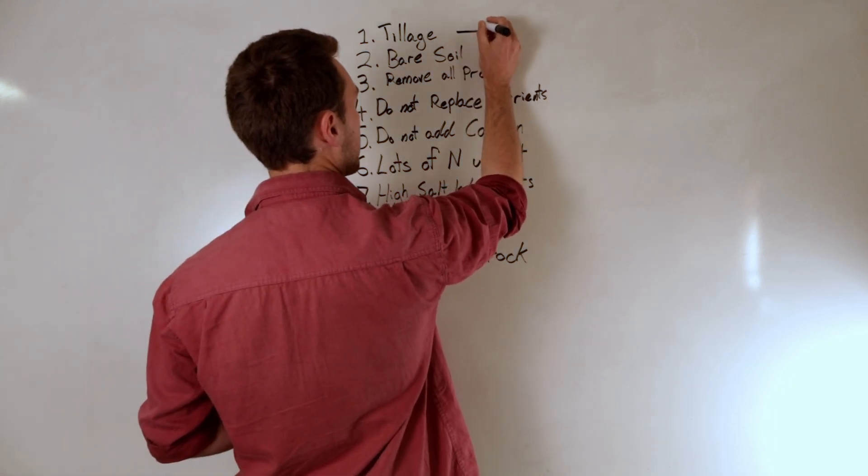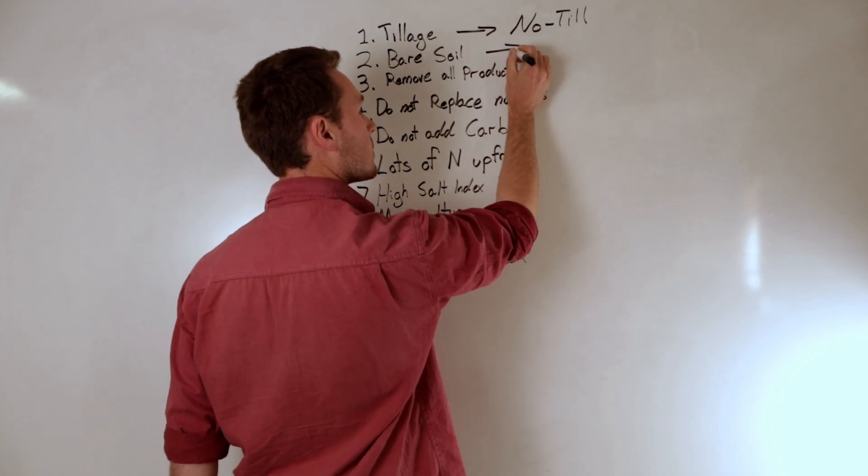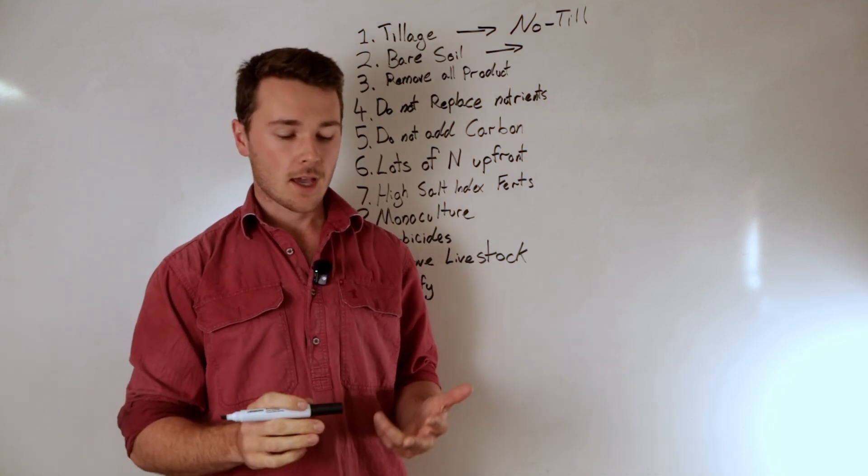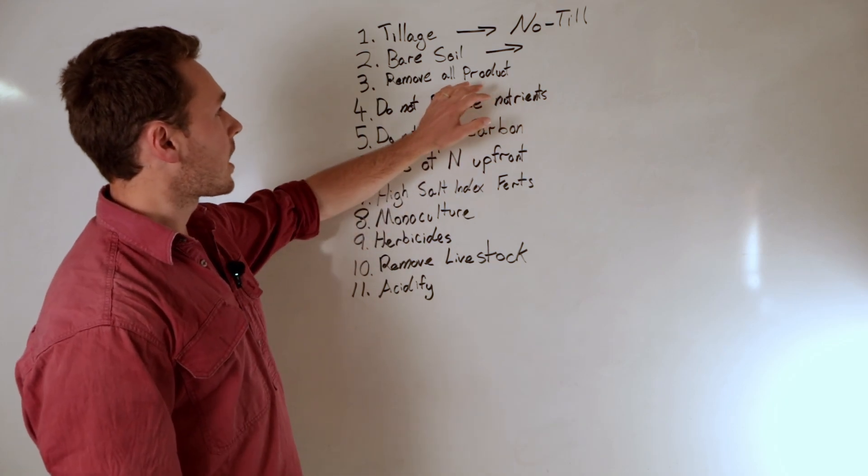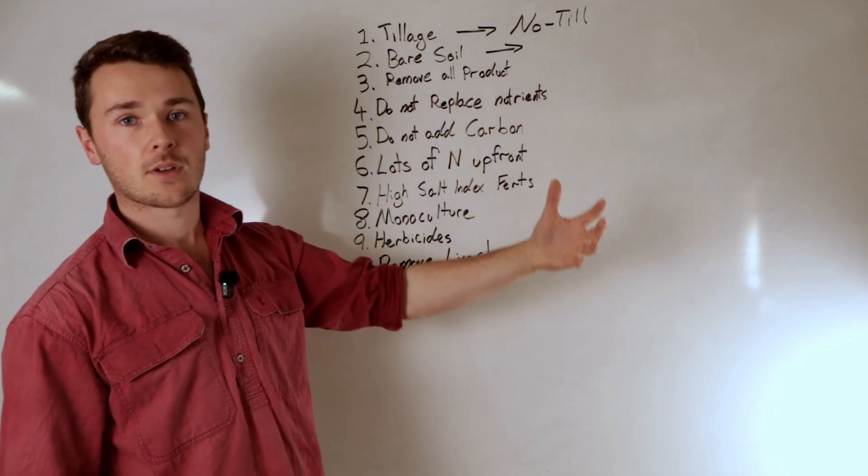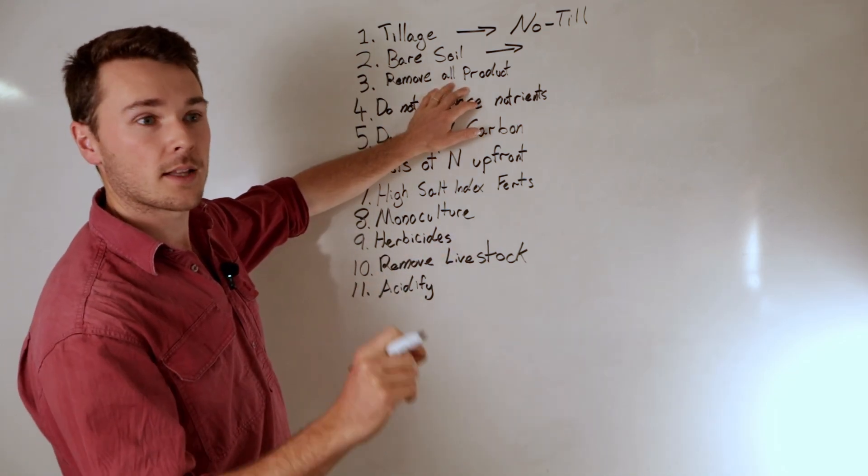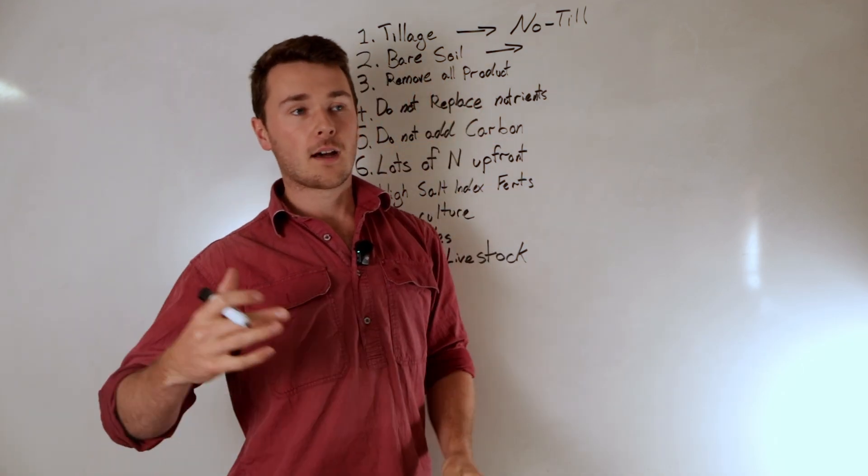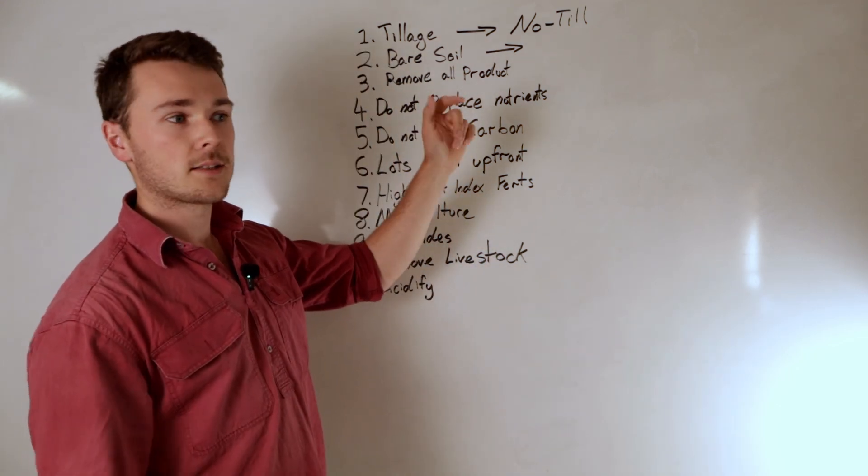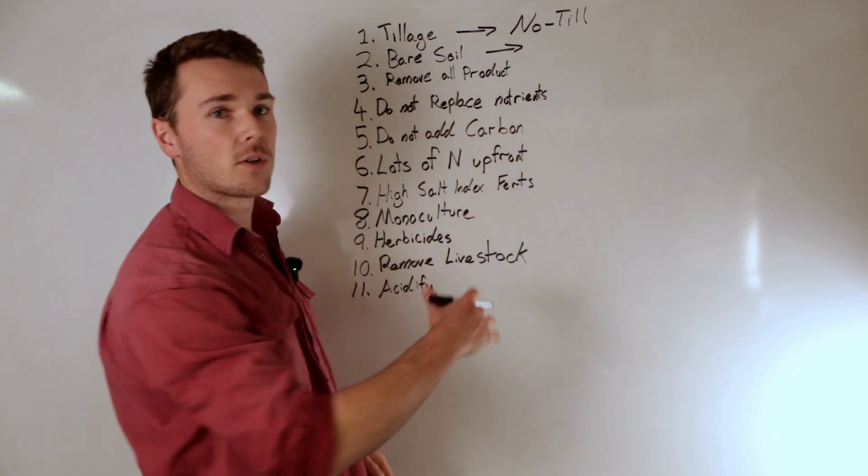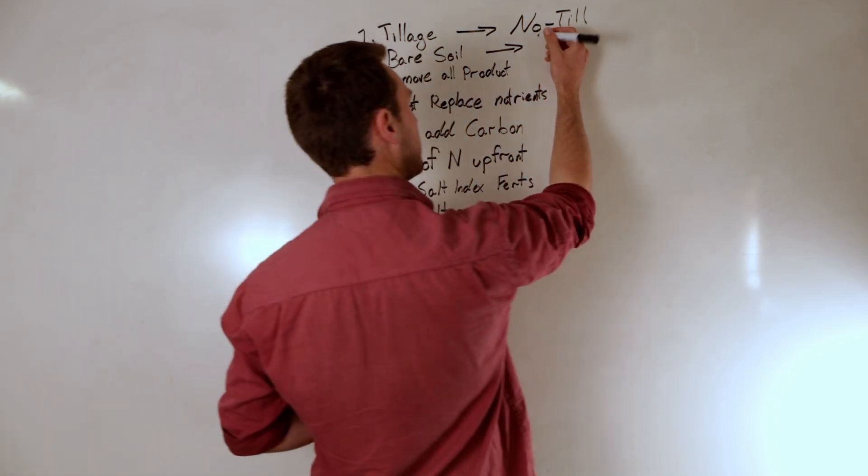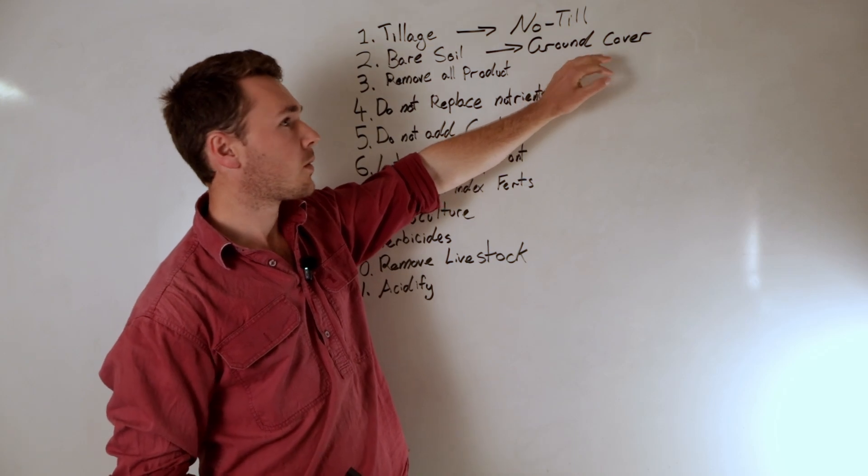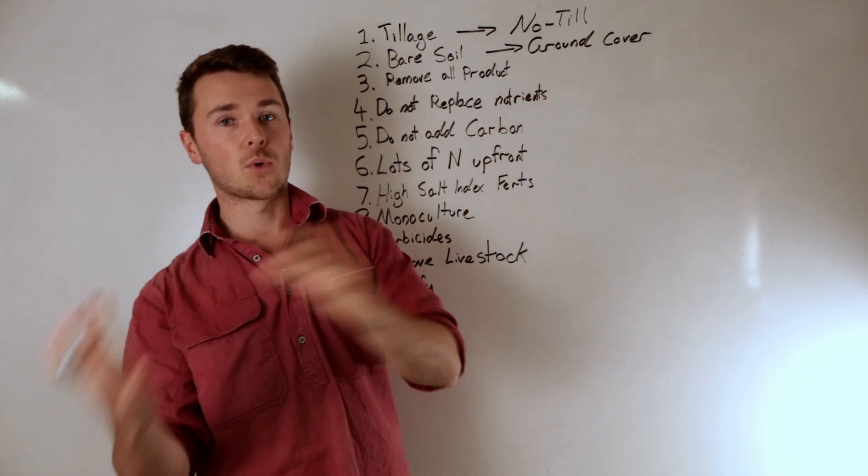So the first one tillage obviously we want to go towards no-till. Bare soil we always want to maintain ground cover. So depending on your system if you're a cropper that's stubble retention which also solves our third problem. Keeping as much product on the paddock as possible. Obviously we need to sell grain or we need to sell livestock or whatever. But keeping as much product on that paddock as possible. So again for broadacre guys it's not getting rid of your stubble. For our livestock producers it's not making hay. It's simply just grazing where it is so we can cycle that nutrients. So we want to make sure we have fully covered ground or ground cover. This ensures that we reduce our erosion rates. So both water and wind erosion we don't want either. We also can reduce our evaporation rate which means there's more water for our crops.